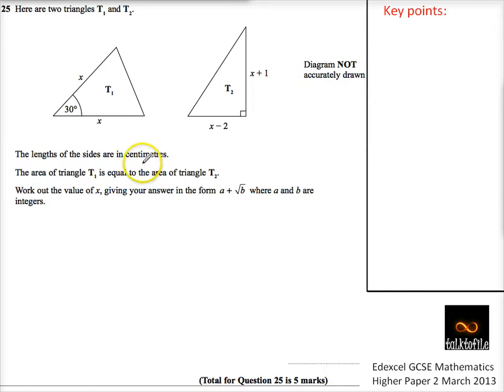Length of the sides are in centimeters. Area of triangle T1 is equal to the area of triangle T2. And giving you a formal answer in a plus b. It's the last question on the paper. This is the hardest question by far.